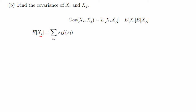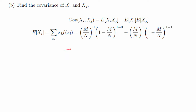So the first term: the expected value of x_i. Because this is a discrete random variable, we're going to be summing over all the possible values of x_i, which is 0 and 1, times x_i times the probability of x_i. Plugging this into the formula we found for f(x_i), we have (m/n)^0 times (1 - m/n)^1 when x_i equals 0, plus the corresponding term when x_i equals 1. Simplifying, the expected value of x_i is m over n.